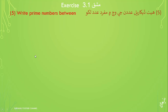Exercise 3.1, first question. If you want to write a letter, A is 6 and 15. 6 and 15 is a letter. A is a letter. B is a letter.